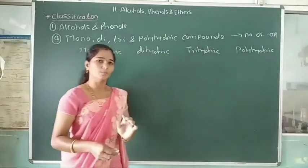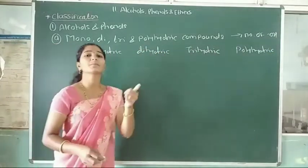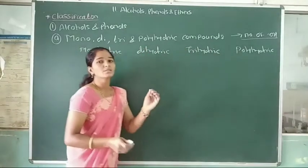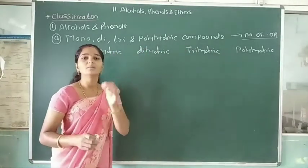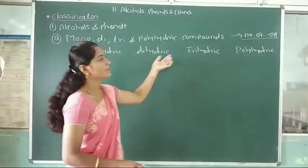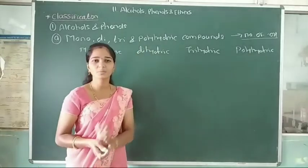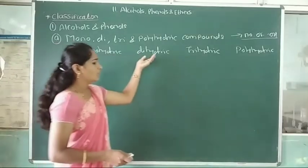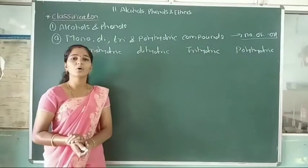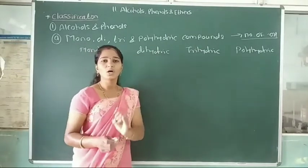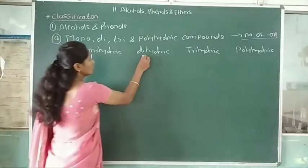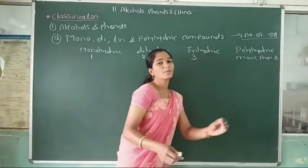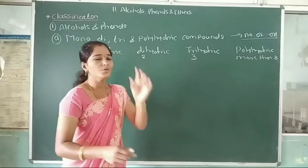Alcohols and phenols are classified as monohydric, dihydric, trihydric, and polyhydric compounds on the basis of the number of hydroxy groups — 1, 2, 3, and more than 3 — attached to carbon atoms in that molecule. We will see each one by one.